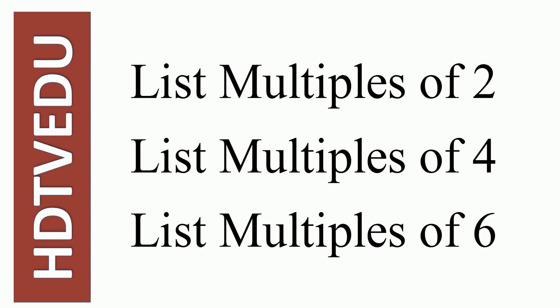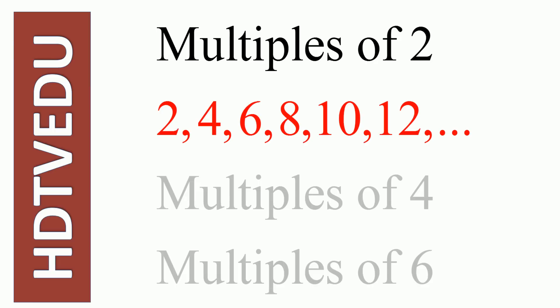What are multiples of 2? 2, 4, 6, 8, 10, 12. How did we get that? 1 times 2 is 2, 2 times 2 is 4, 3 times 2 is 6, 4 times 2 is 8, 5 times 2 is 10, 6 times 2 is 12.